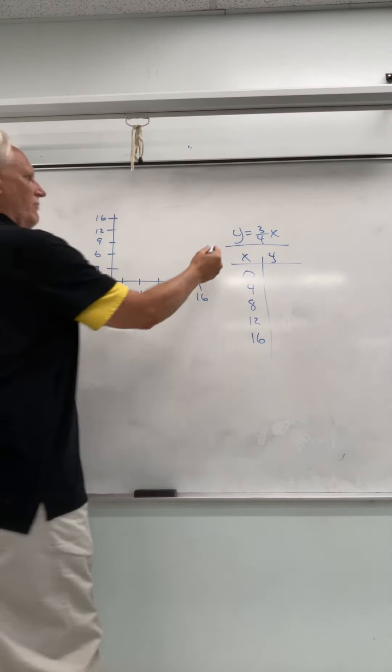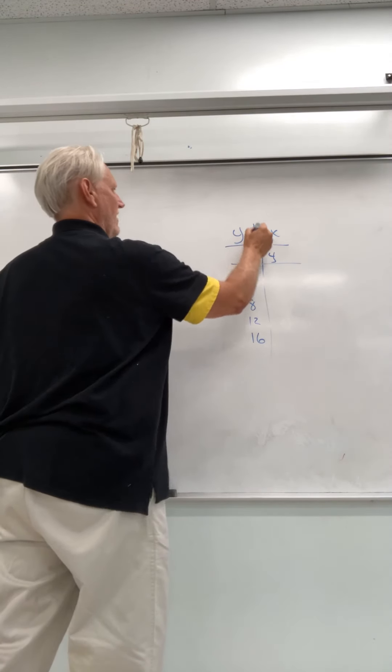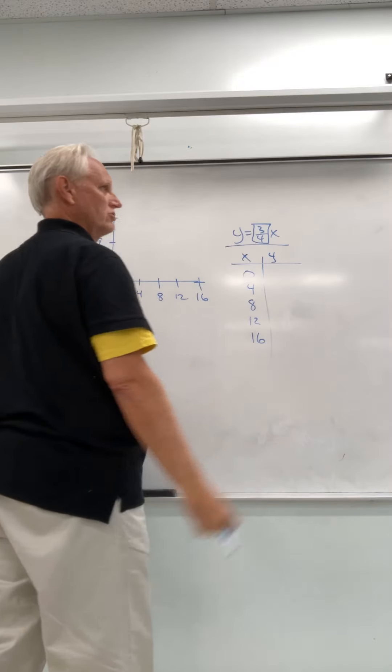So I have my equation of y equals 3 fourths x. So my constant of proportionality is 3 fourths, or 3 over 4.